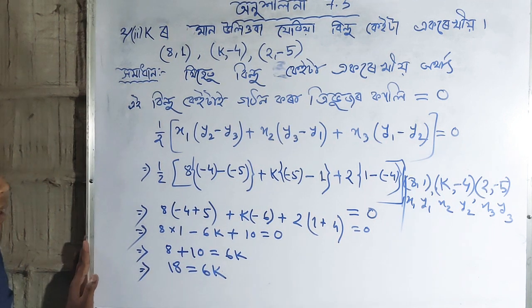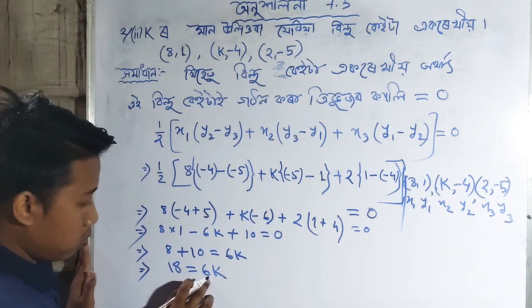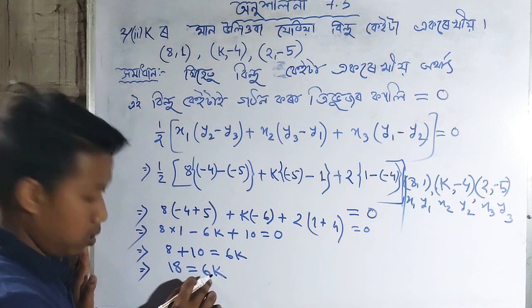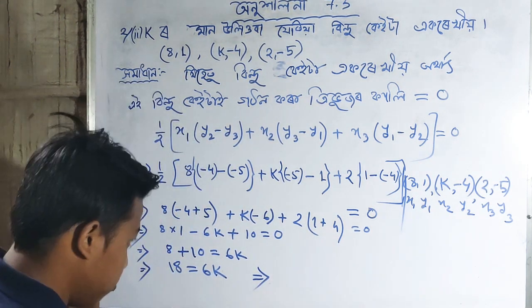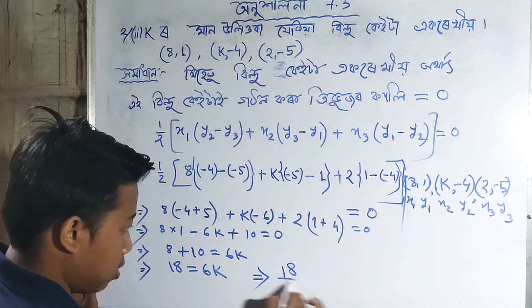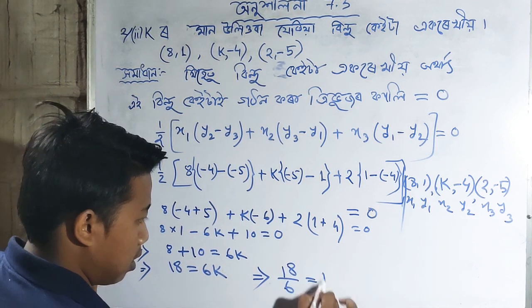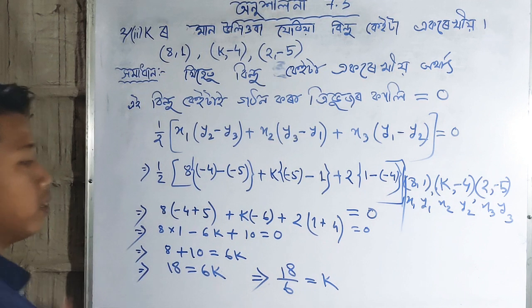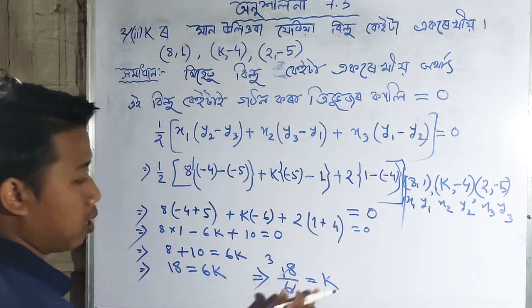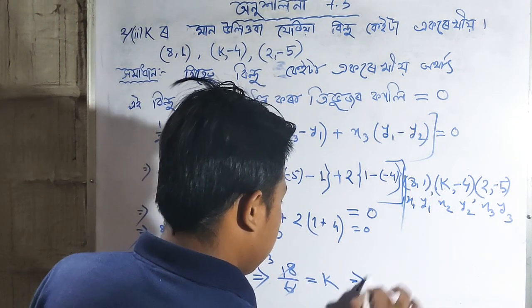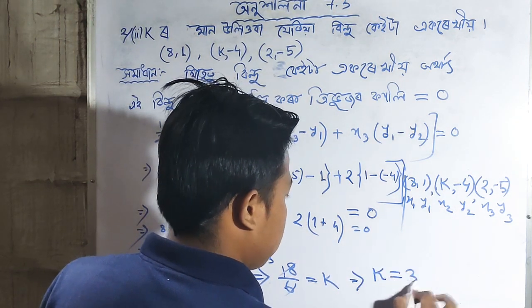From 18 equals 6K, we can solve for K. Dividing both sides by 6: K equals 18 divided by 6, which gives us K equals 3. Therefore K equals 3.